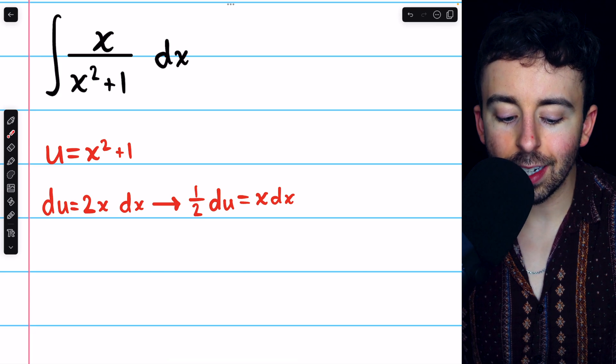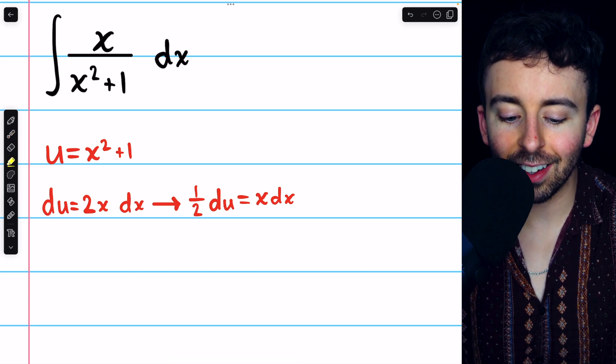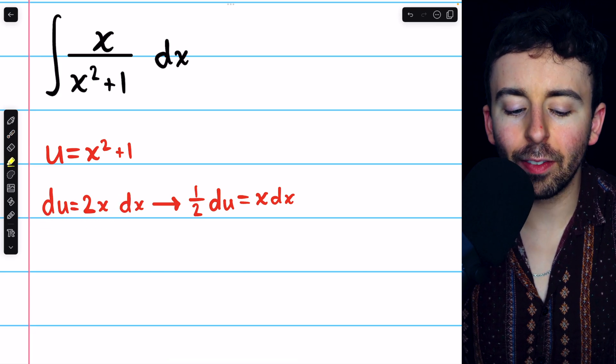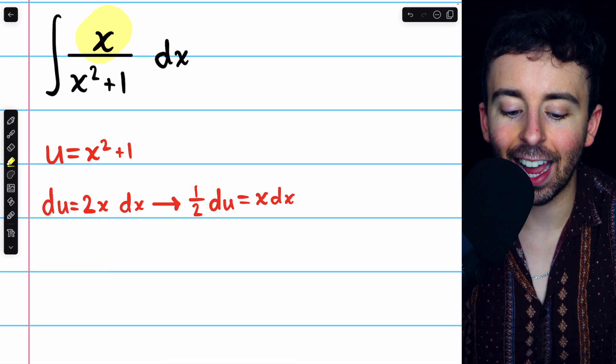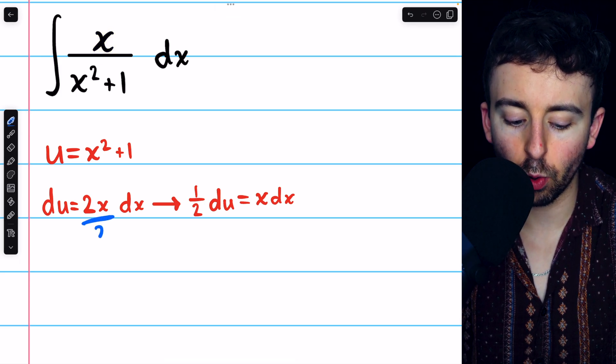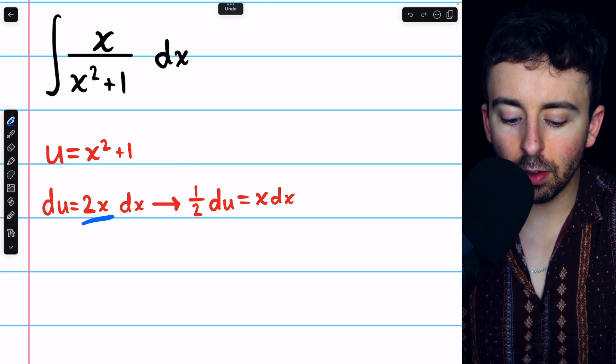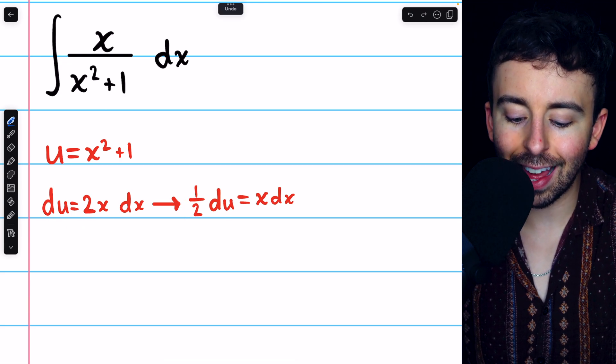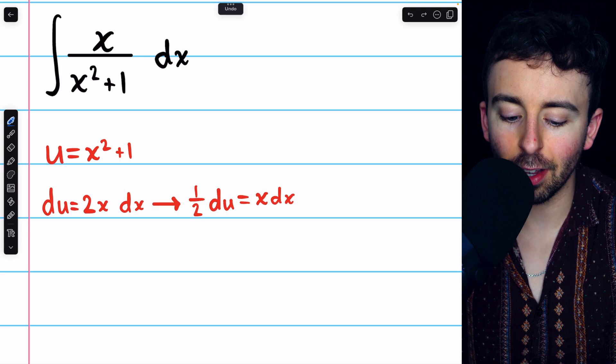So u equals x squared plus 1, du equals 2x dx. In our integral, we don't have 2x, we just have a single x. So to make those match up, we'll divide both sides of this equation by 2. Then we have 1 half du on the left equals x dx on the right.